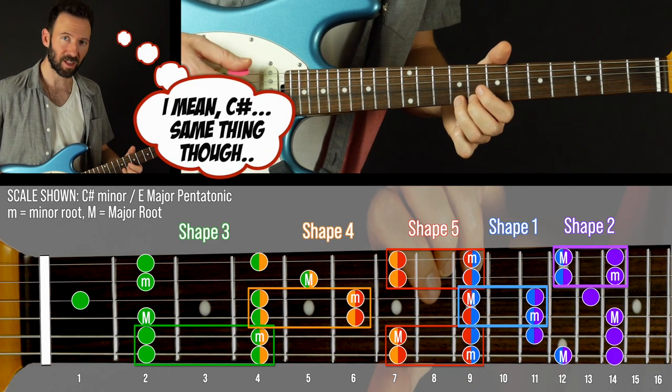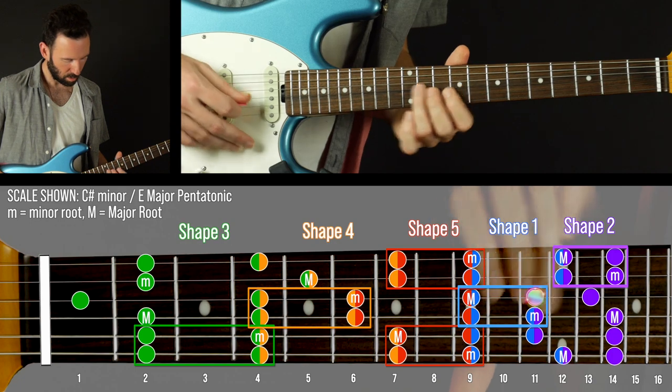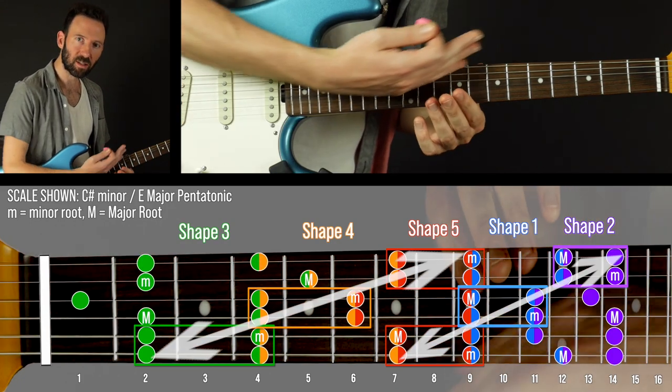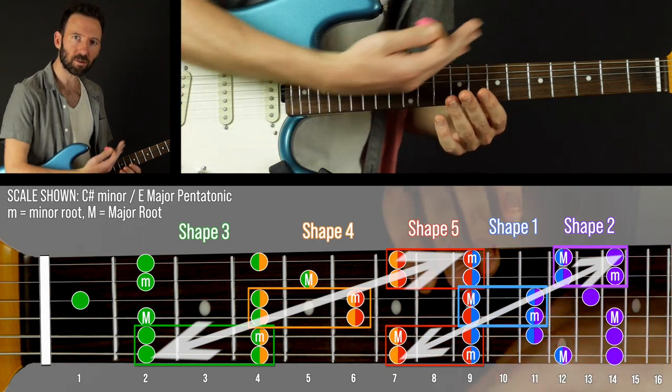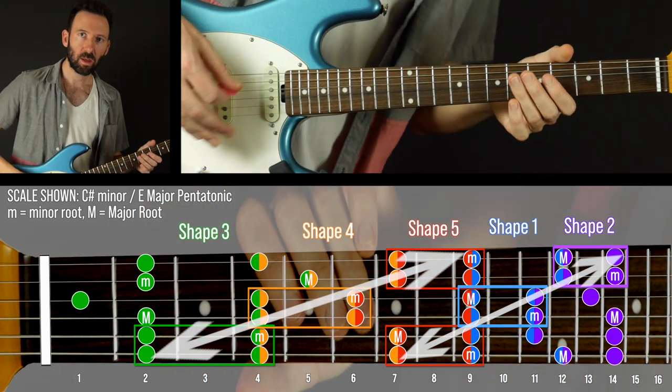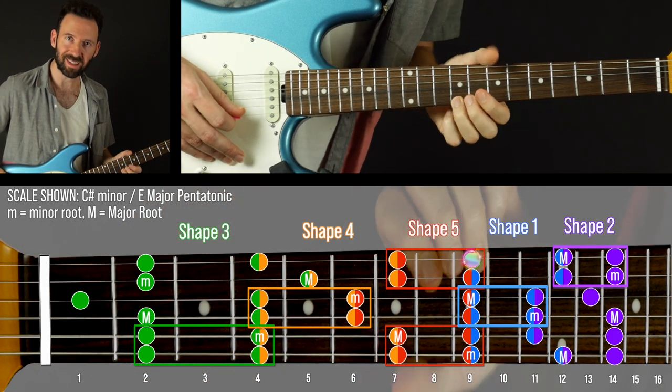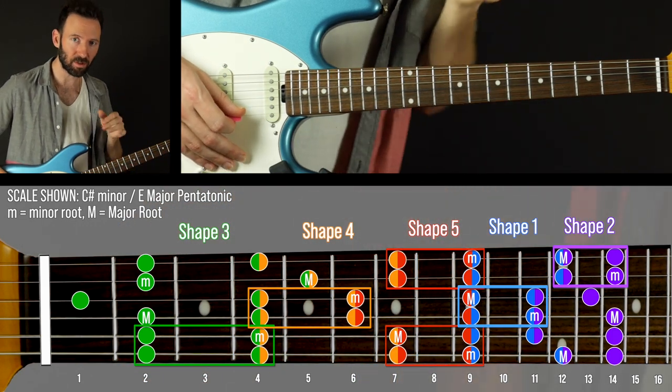Right now we're in D flat minor pentatonic and we can use these to connect three shapes in a way that goes either up or down like this. So this would be just playing the cells but we need some connector notes.